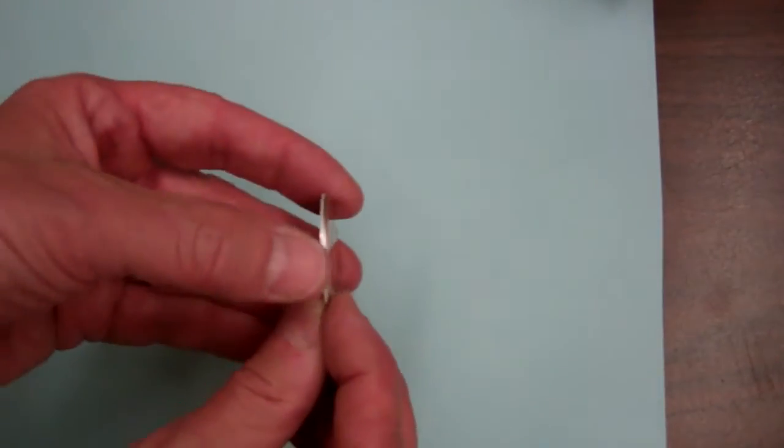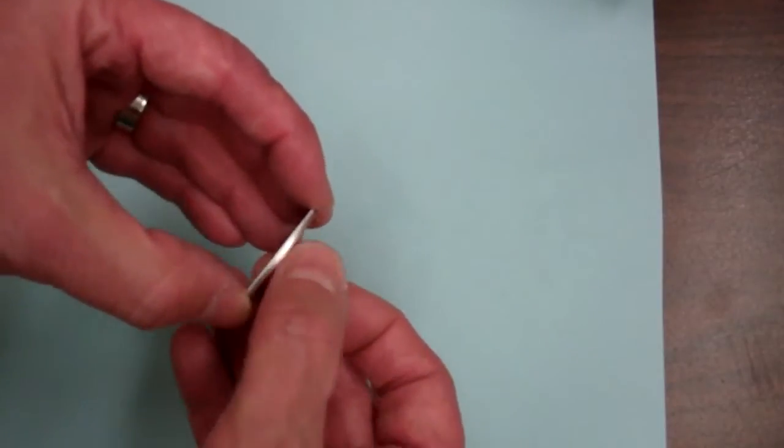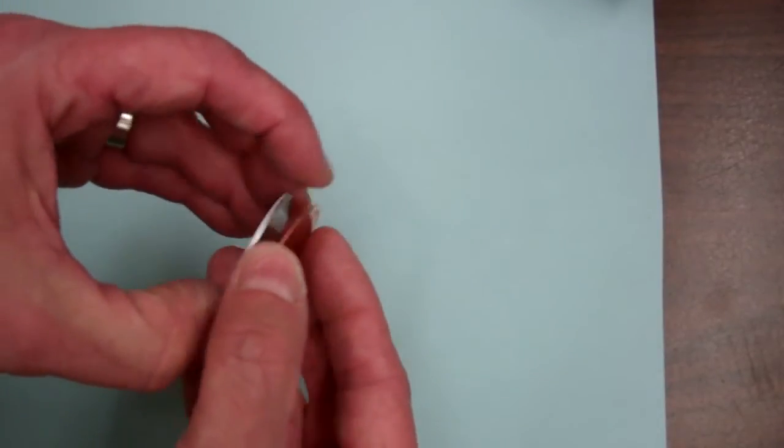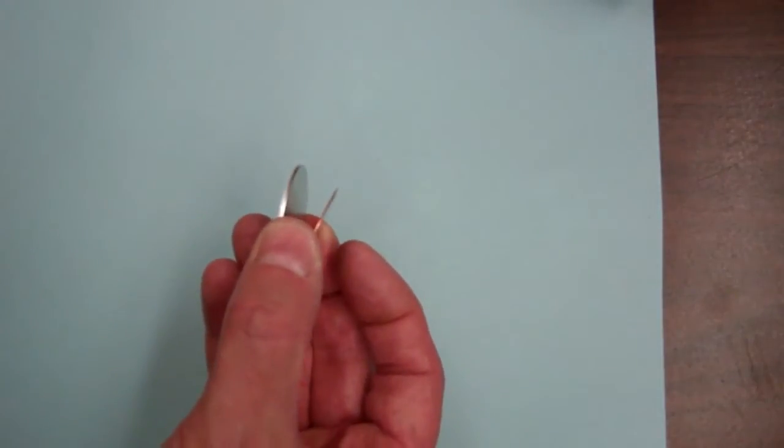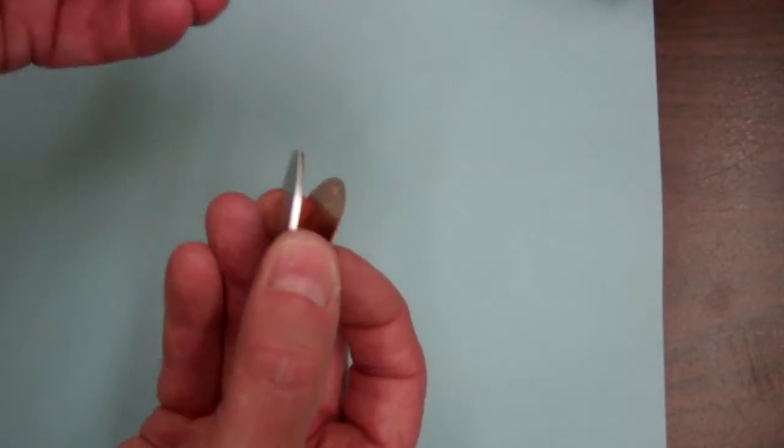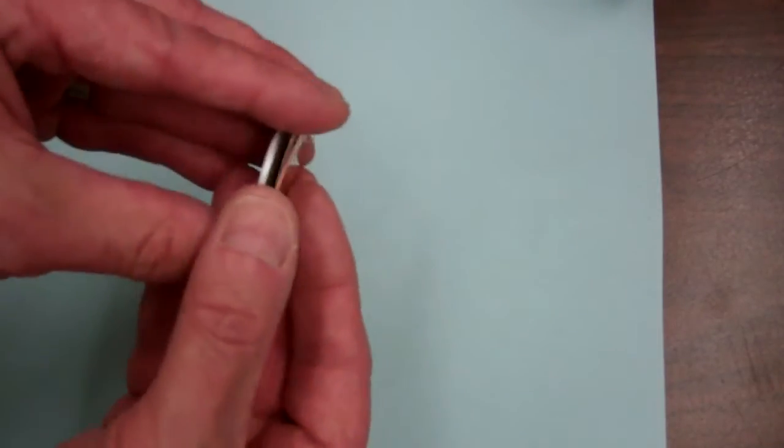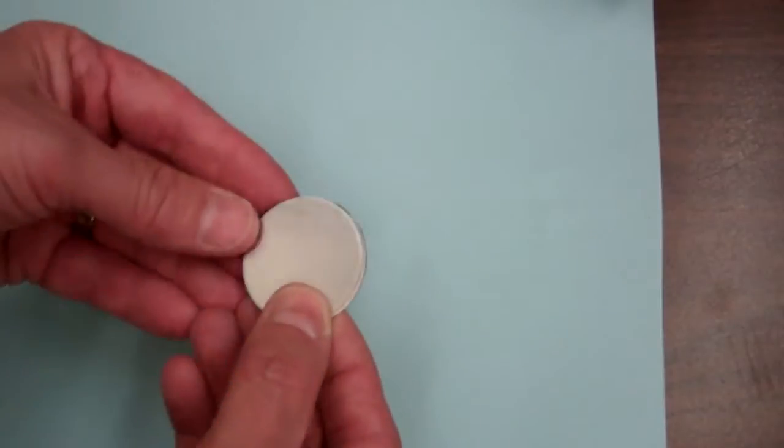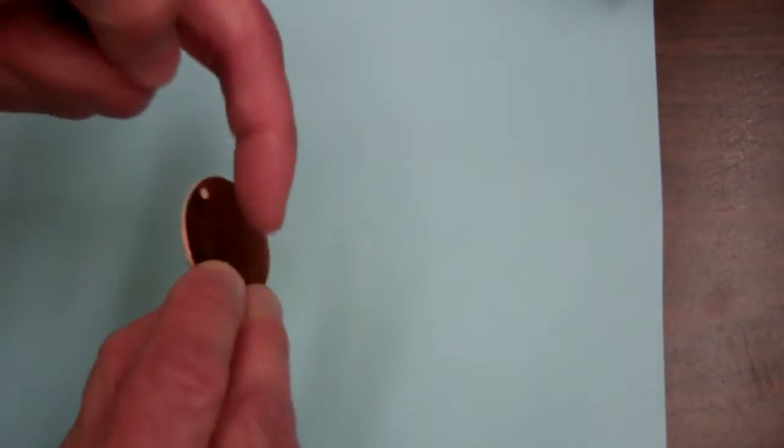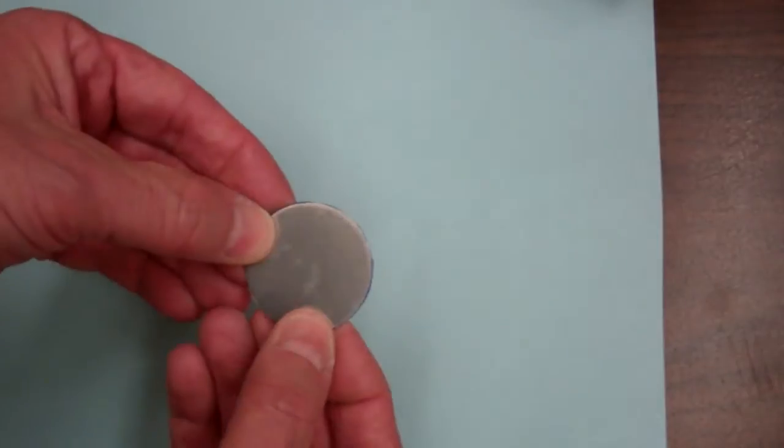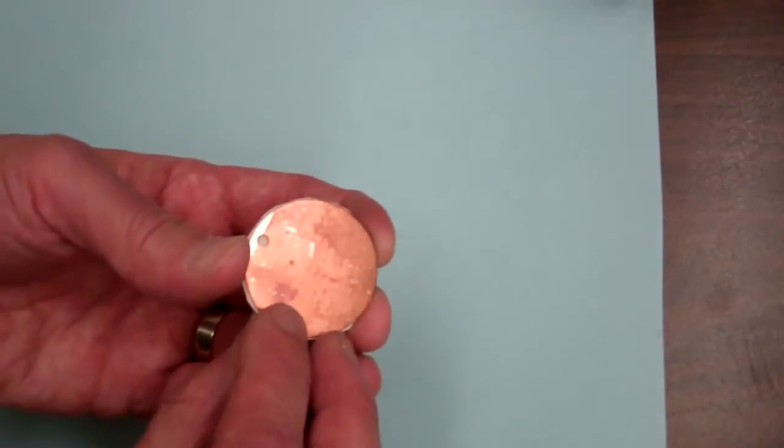Now, what Volta did to cause that transfer of charge to be continuous is that he put a salt soaked piece of cloth or cardboard between. And then what he found was if he made an electrical connection to the zinc and the copper, he could get a continuous flow of current.